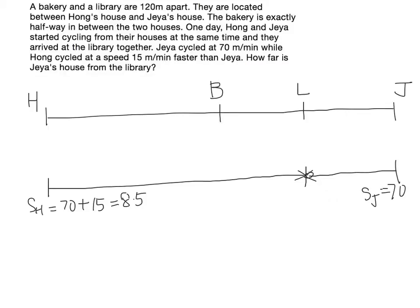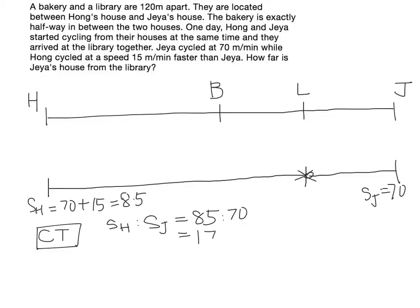Using the constant time concept, the ratio of their speeds will be the same as the ratio of the distance traveled, since they used the same time. So the speed ratio is 85 versus 70, which divided by 5 gives 17 to 14. So the speed ratio is the same as the distance ratio between Hong and JS.